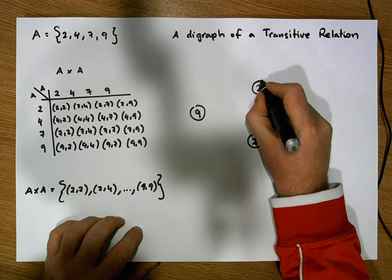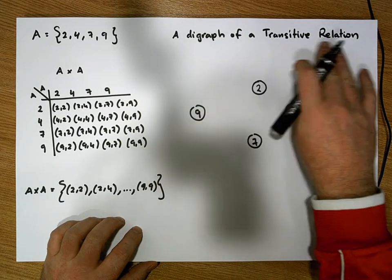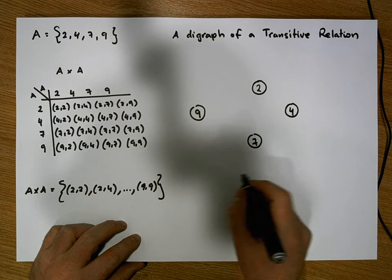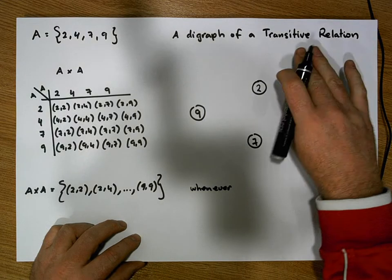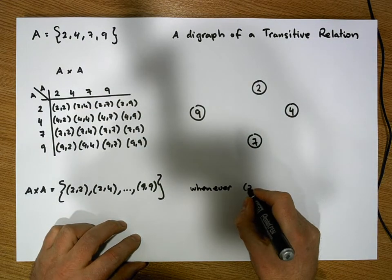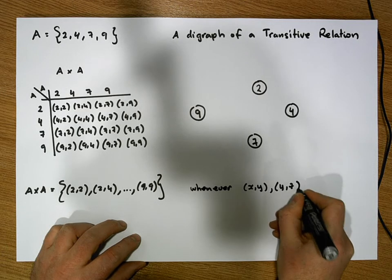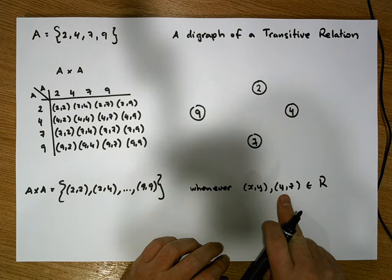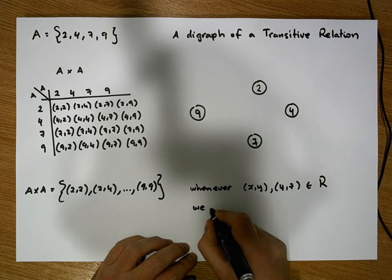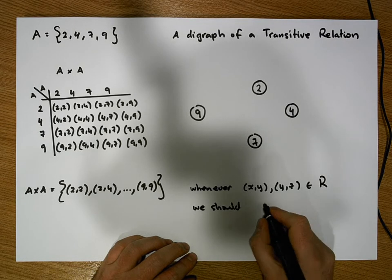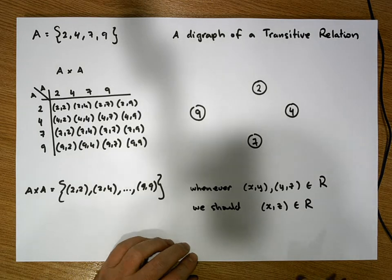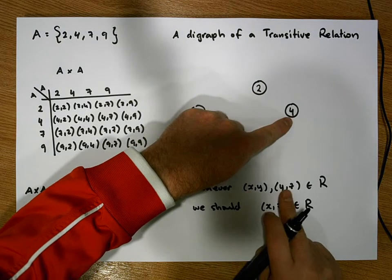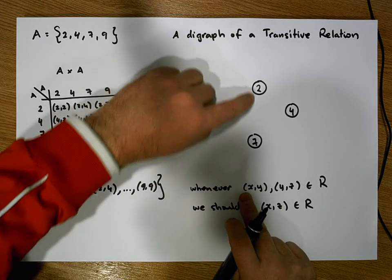We'd like to understand what a transitive relation looks like when represented in a digraph. The definition of a transitive relation tells us that whenever we have two ordered pairs — say (x, y) and (y, z) — in the relation, where the range value in the first ordered pair is the same as the domain value in the second ordered pair, we should have the ordered pair (x, z) in R. In other words, whenever I can hop from one node to another and then to a third, I should be able to go directly from the first node to the last.